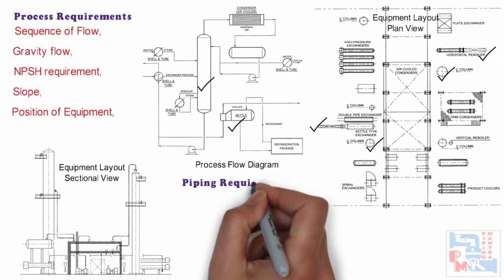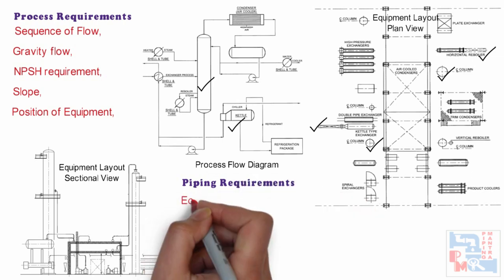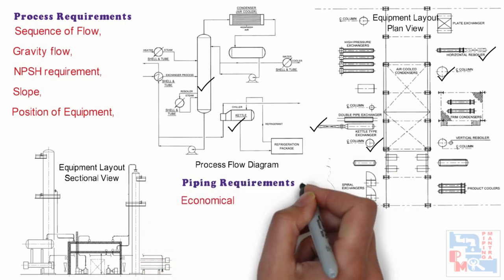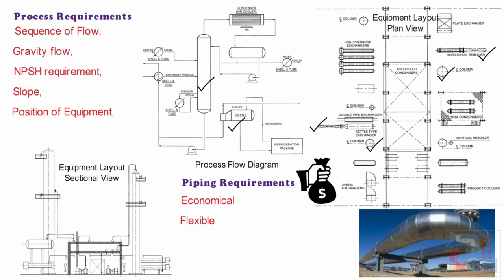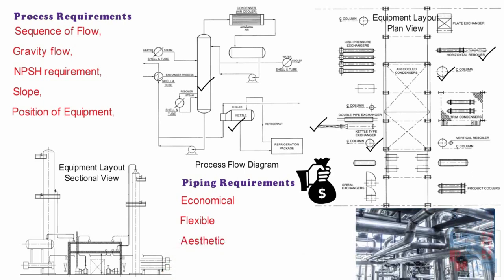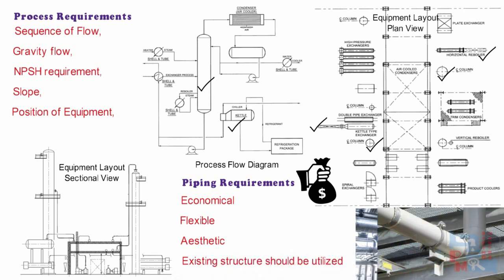Other piping requirements are: piping should be economical with the shortest piping as much as possible. We have to consume smaller floor space and material should be smartly used. While routing pipe, we should consult the stress engineer for flexibility of critical lines so that nozzle and equipment locations can be finalized for the critical lines. Piping should be aesthetic — the layout should not look ugly — and as much as possible, existing structure should be utilized for pipe support.